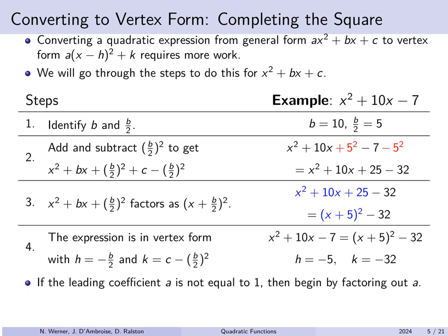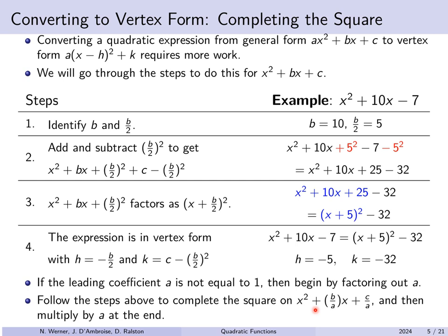If the leading coefficient a isn't equal to 1 — say you have 7x² or −3x² — the first step from general form is to factor an a out of everything. Factoring a out of ax² leaves 1·x², and you'd have b/a and c/a inside. So from that expression x² + (b/a)x + (c/a), all being multiplied by a, complete the square on the inner expression that has x² multiplied by 1, then multiply back the a at the end. We'll see an example of this later on.